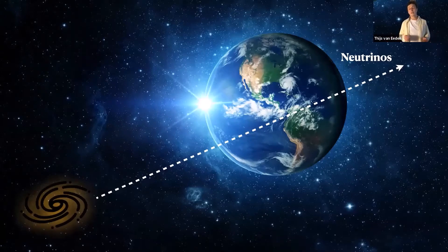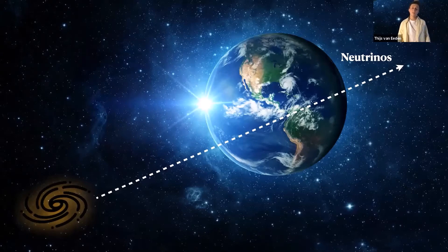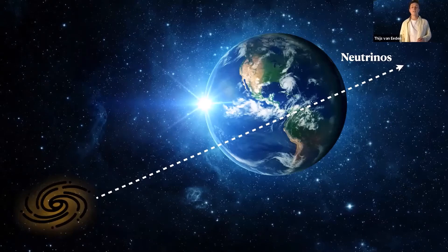If we want to detect this light, we need to build an extremely large detector because these interactions of neutrinos are extremely rare. The perfect place for something like this? The bottom of the Mediterranean Sea.